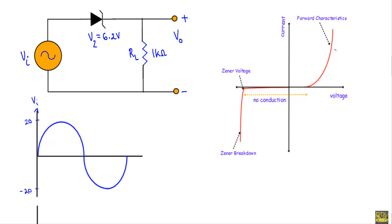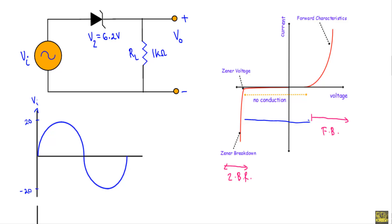From the IV characteristics of the Zener diode, it is evident that the Zener diode will have three regions of operation. When the applied forward voltage is greater than the built-in potential, the Zener diode will be in forward bias. When the applied reverse voltage is greater than Vz, the Zener diode will operate in the Zener breakdown region. Between forward bias and Zener breakdown there is an intermediate state known as the non-conducting state or off state.